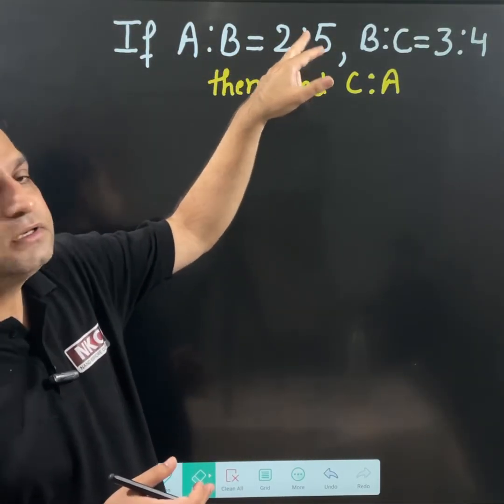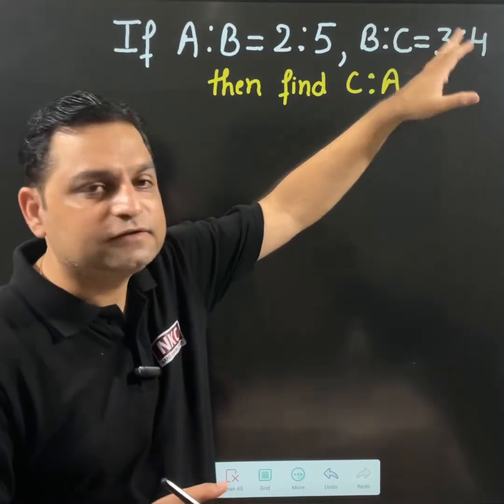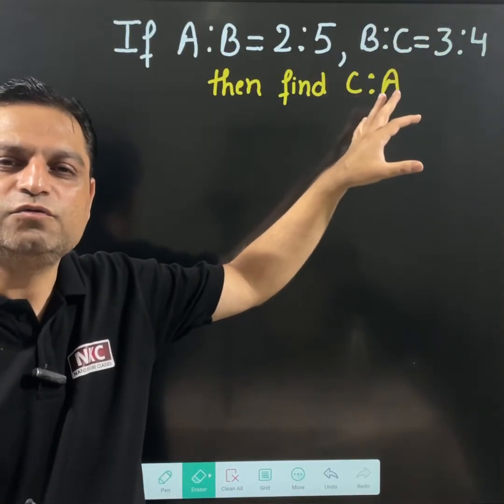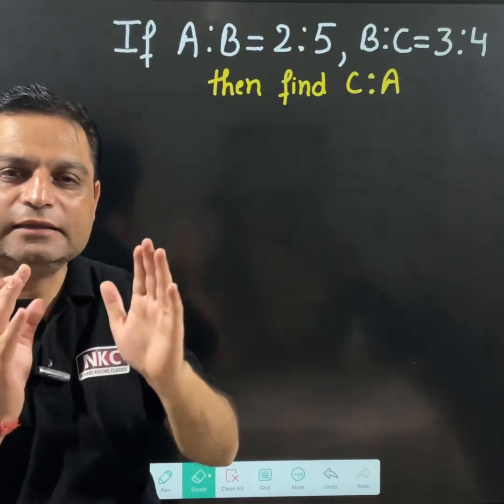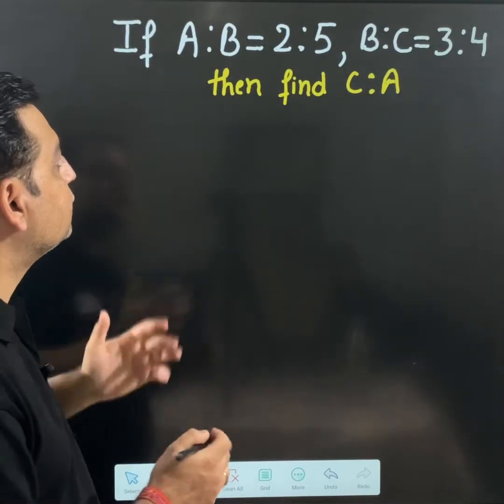If A ratio B is 2 ratio 5, B ratio C is given as 3 ratio 4, we need to find C ratio A. How we can find C ratio A in the form of a trick. Very quickly I am going to tell you.